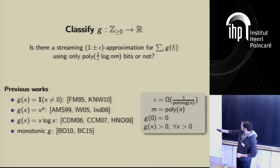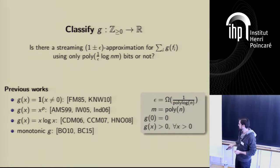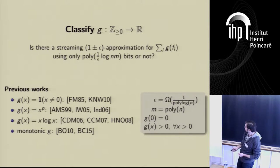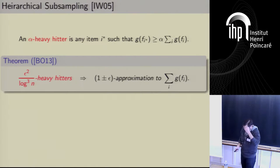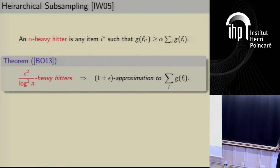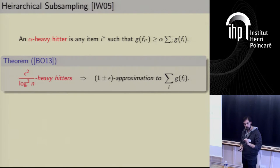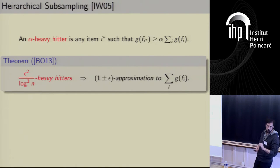The interesting case is when m and n are polynomially related — so log m and log n are essentially the same — and g is strictly positive on the positive half-line. I'm going to tell you a classification for these functions. Except for a small strange class, I'll give you a classification saying: here are three properties, and a function has a polylogarithmic space approximation algorithm if and only if it satisfies all three of these properties.